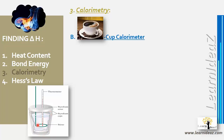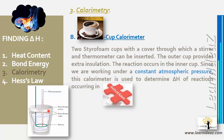Solutions are mixed together inside, a stirrer keeps the temperature uniform, and a thermometer records the temperature. A lid is important to prevent heat exchange. This calorimeter operates under constant atmospheric pressure — unlike the bomb calorimeter which operates at constant volume. It is used to determine delta h for reactions occurring in solution.